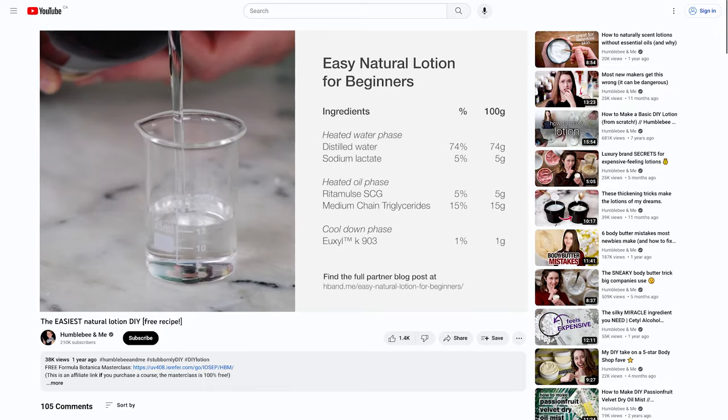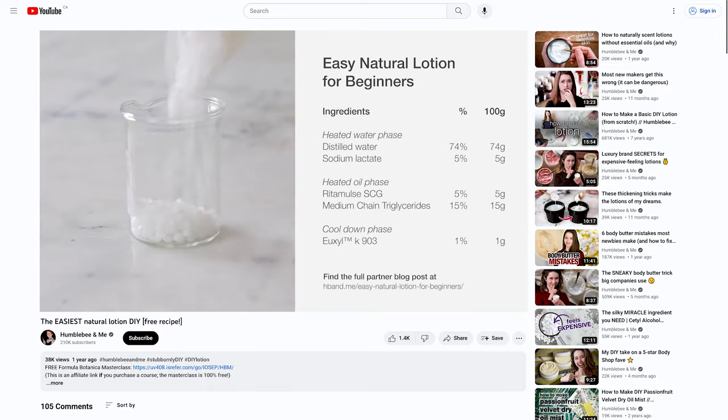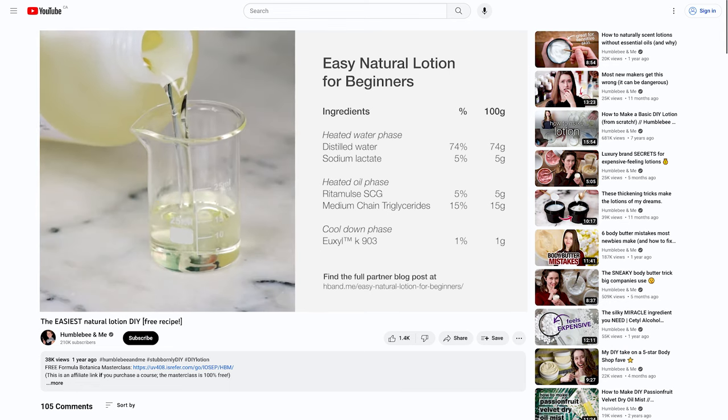The formulation we'll be working from today is a lightly modified version of my easy natural lotion for beginners. All I've done is switched up the preservative to liquid germol plus, as it has a much broader effective pH range, meaning we don't have to be quite as concerned about the final pH of our experimental emulsions. This does mean the lotion isn't natural anymore, but it does make it a much easier base formulation to experiment with.